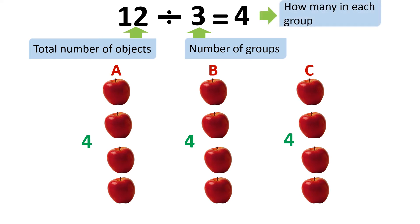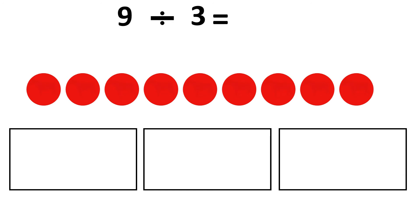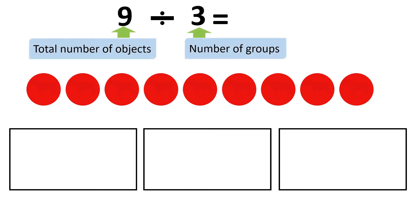So now we know that we have four apples in each group. Look at this number sentence: 9 divided by 3 equals what? 9 is the total number of objects and 3 is the number of groups. So I will divide these counters into three groups to see how many counters I get in each group.